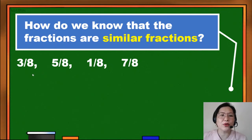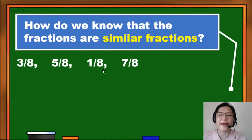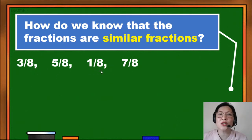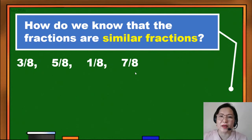So in these examples, the denominators are 8, 8, 8, and 8. Do you notice anything? The denominators are all the same. So if the case is like this, where the denominators are the same, they are called similar fractions.